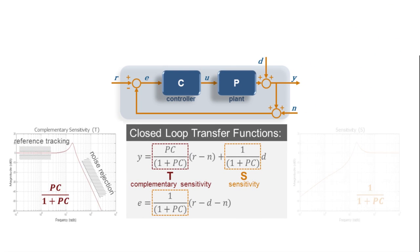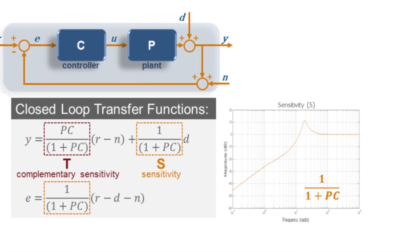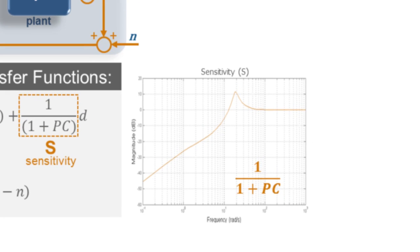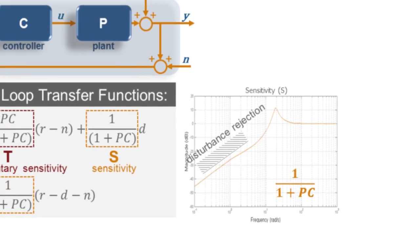On the other hand, the corresponding frequency shape we will get for the sensitivity transfer function S will resemble a high-pass filter like this. Good attenuation in the low frequency range, well below the system bandwidth, means that any disturbances in that frequency range will not significantly affect our output signal Y. In other words, our system will have good frequency disturbance rejection characteristics.